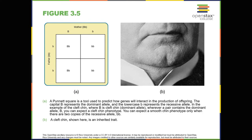Imagine that a woman with a cleft chin mates with a man with a smooth chin. What type of chin will their child have? The answer depends on which alleles each parent carries. If the woman is homozygous for cleft chin (capital B, capital B), her offspring will always have a cleft chin. It gets a little more complicated if the mother is heterozygous for this gene (capital B, lowercase b). Since the father has a smooth chin, and is therefore homozygous for the recessive allele (lowercase b, lowercase b), we can expect the offspring to have a 50% chance of having a cleft chin and a 50% chance of having a smooth chin, as seen in Figure 3.5.